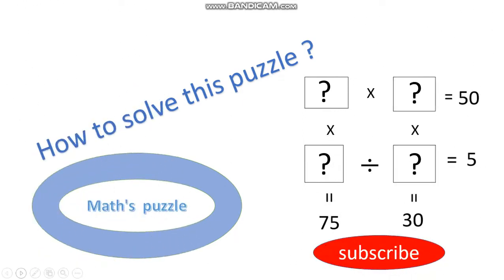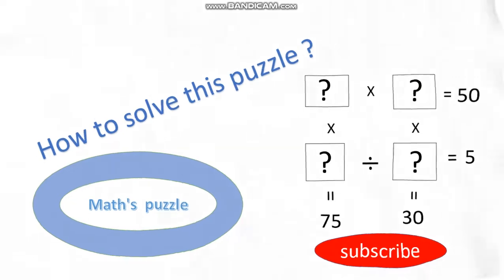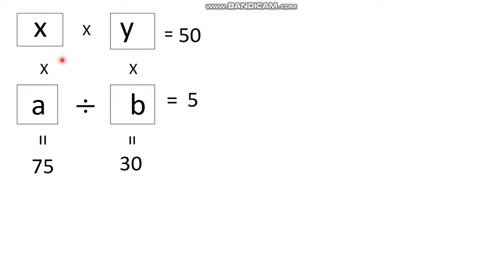Hi friends, today we are going to solve one maths puzzle. This is our mathematical puzzle — see, there are question marks where we need to fill in suitable numbers. If I multiply in this direction we should get 50, if I divide this number by this number we should get 5, if I multiply in this direction we should get 75, and if I multiply in this direction I should get 30. This is the puzzle which I am going to solve now.